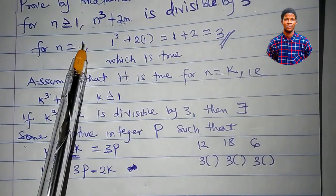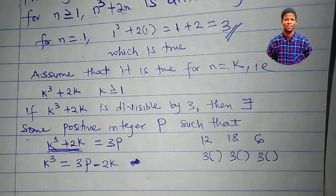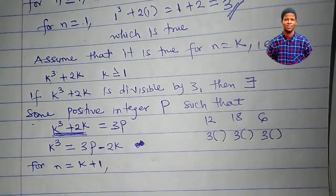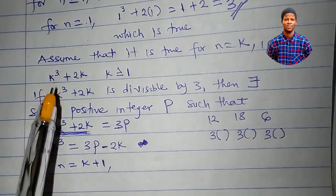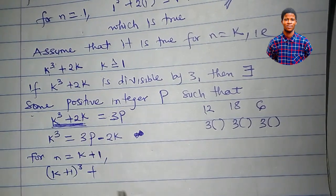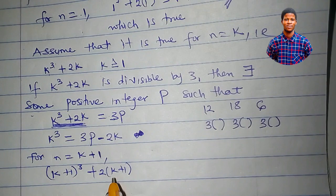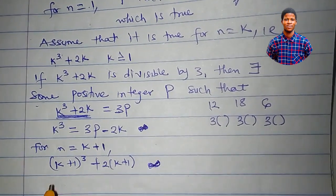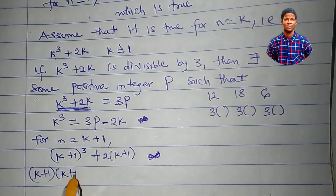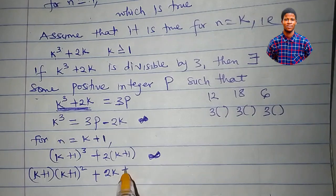We've shown it is true for n equal to 1 and assumed it is true for n equal to k. Now we have to show it is true for n equal to k plus 1. For n equal to k plus 1, we need to show that (k plus 1) cubed plus 2(k plus 1) is divisible by 3. Let's expand (k plus 1) cubed as (k plus 1)(k plus 1) squared, and 2(k plus 1) as 2k plus 2.